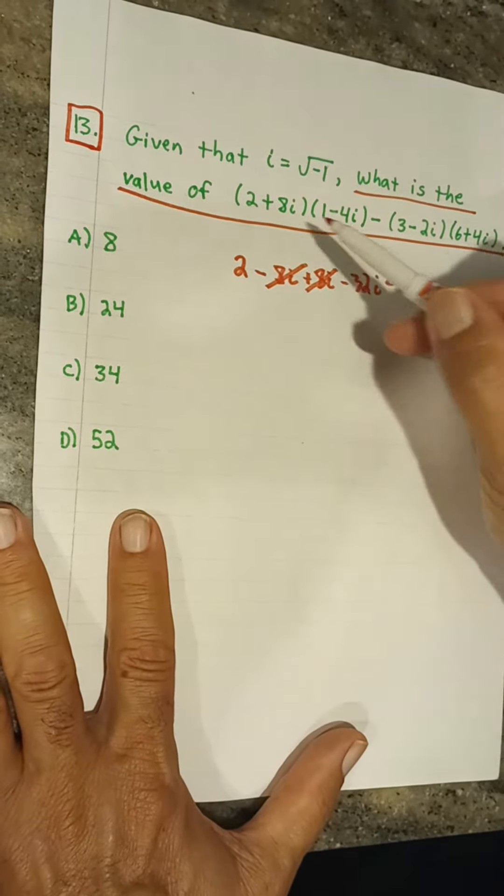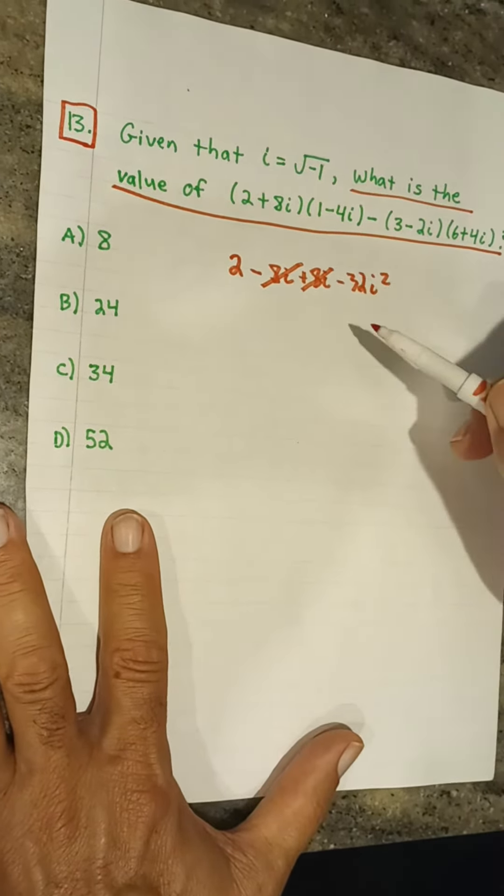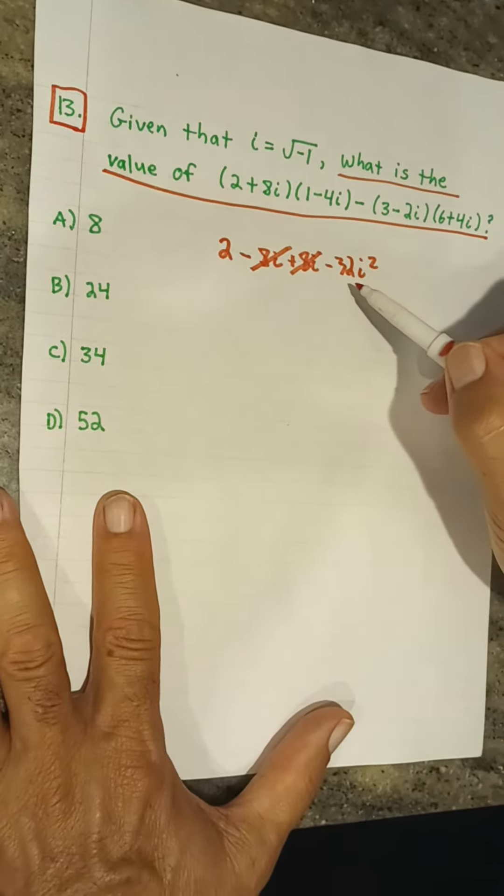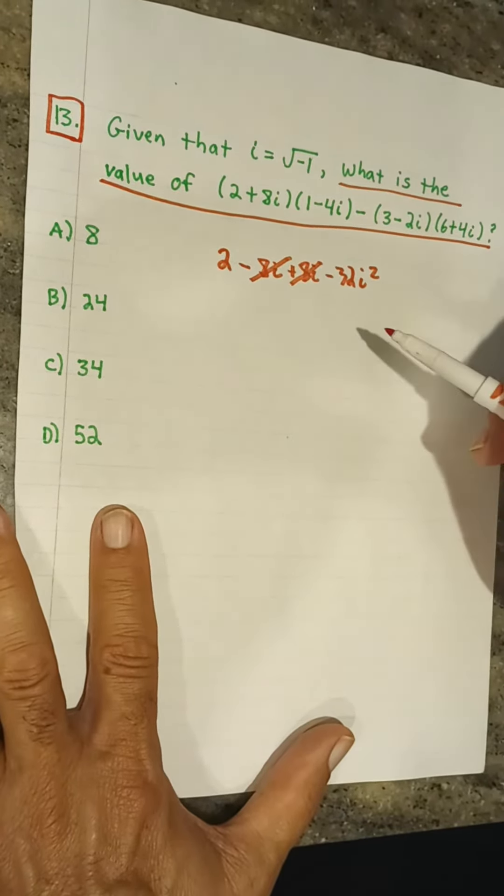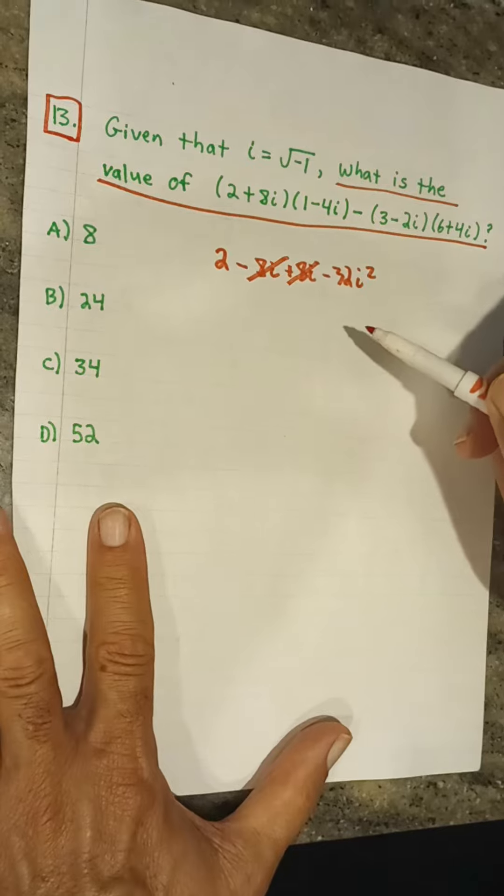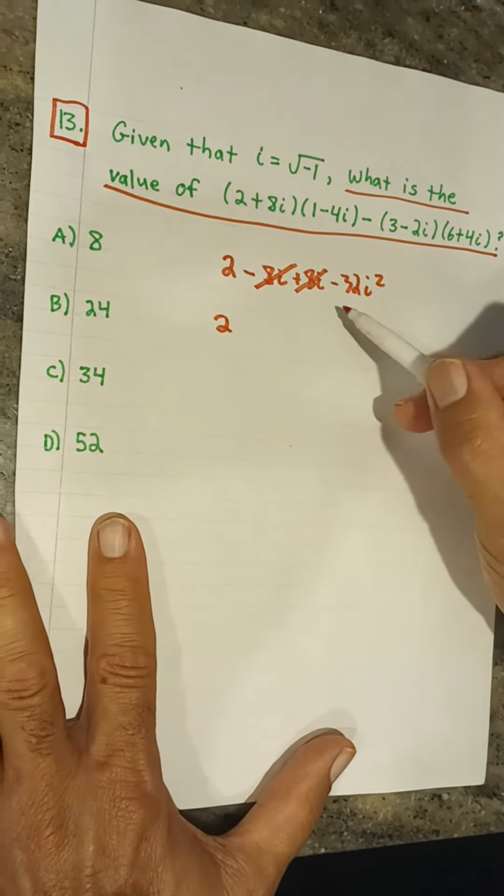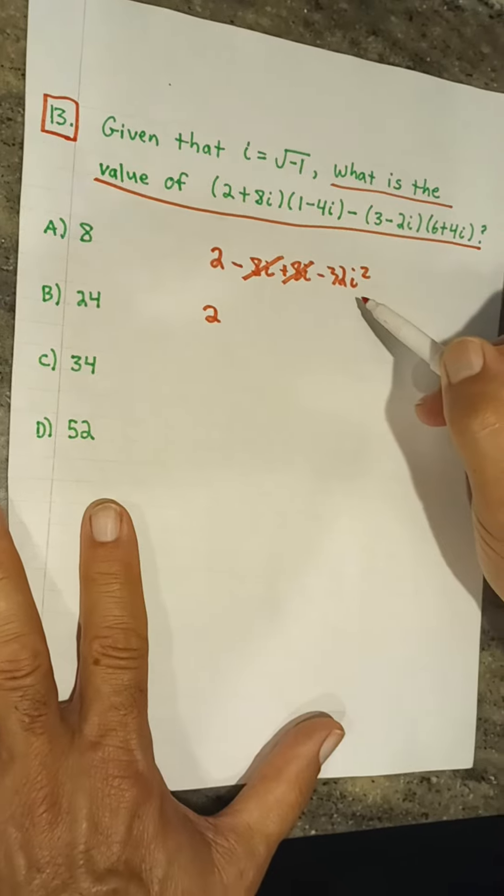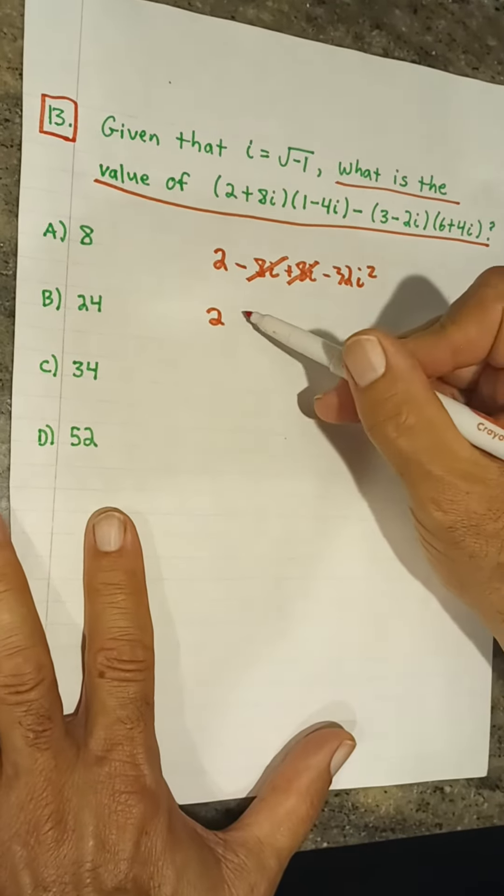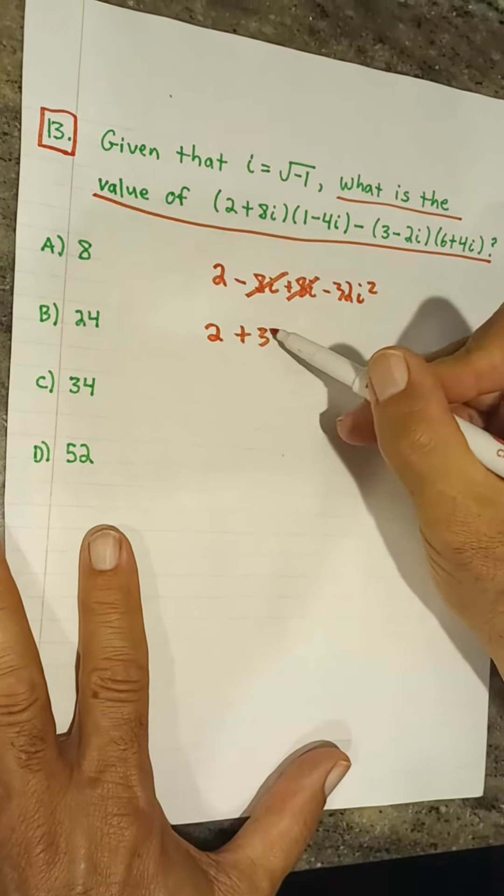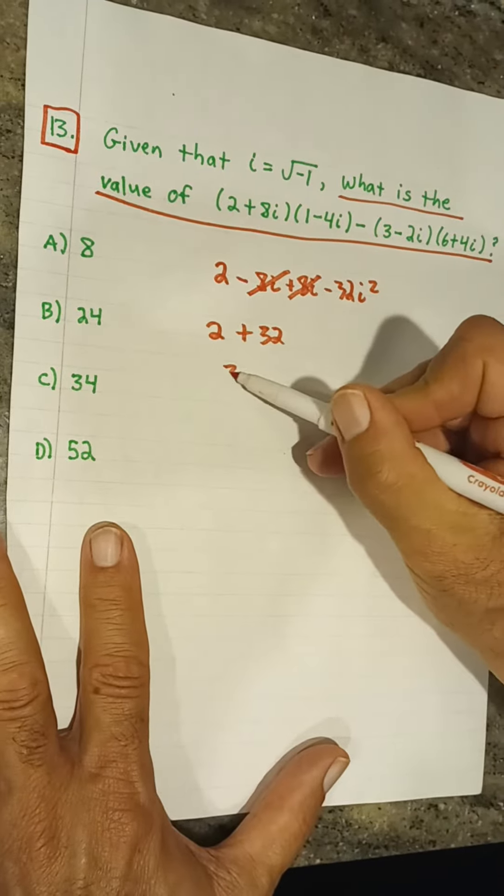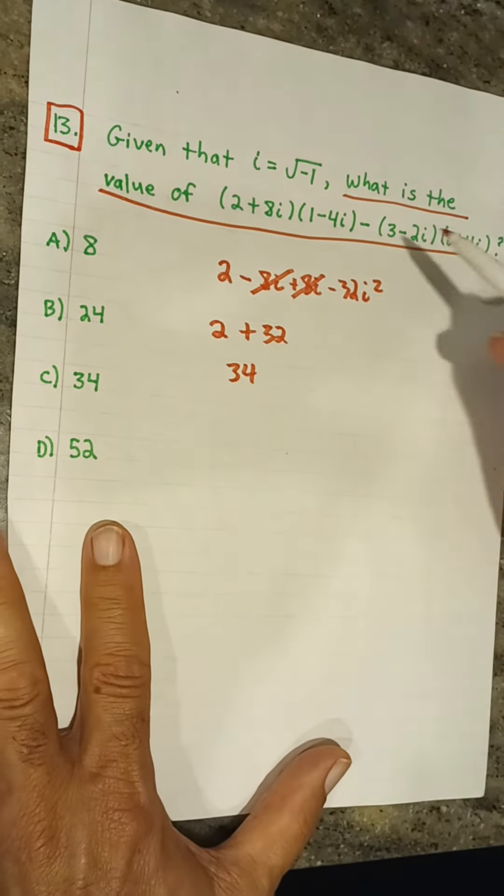So here for the first set of terms, we see we have negative 32i squared. We need to remember that i squared is negative 1. So we have here 2. And then negative 32 times negative 1 is going to be positive 32. So here we have 34 for our first set.